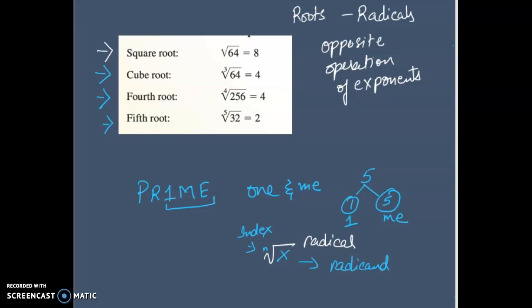They are nothing but the opposite operation of exponents. Exponent means if I ask you what is 2 cubed, 2 cubed means 2 times 2 times 2. I am multiplying the same number 3 times. It is just like making a crown of the same thing. So it is the undoing of exponents called basically the radicals.